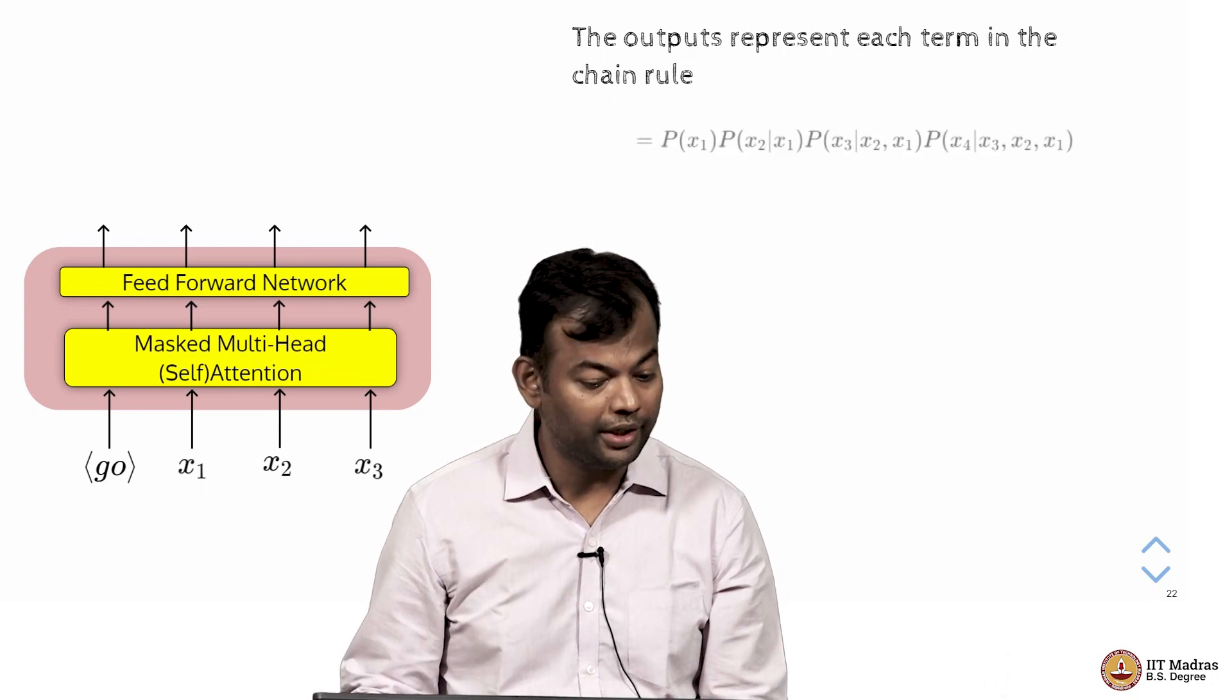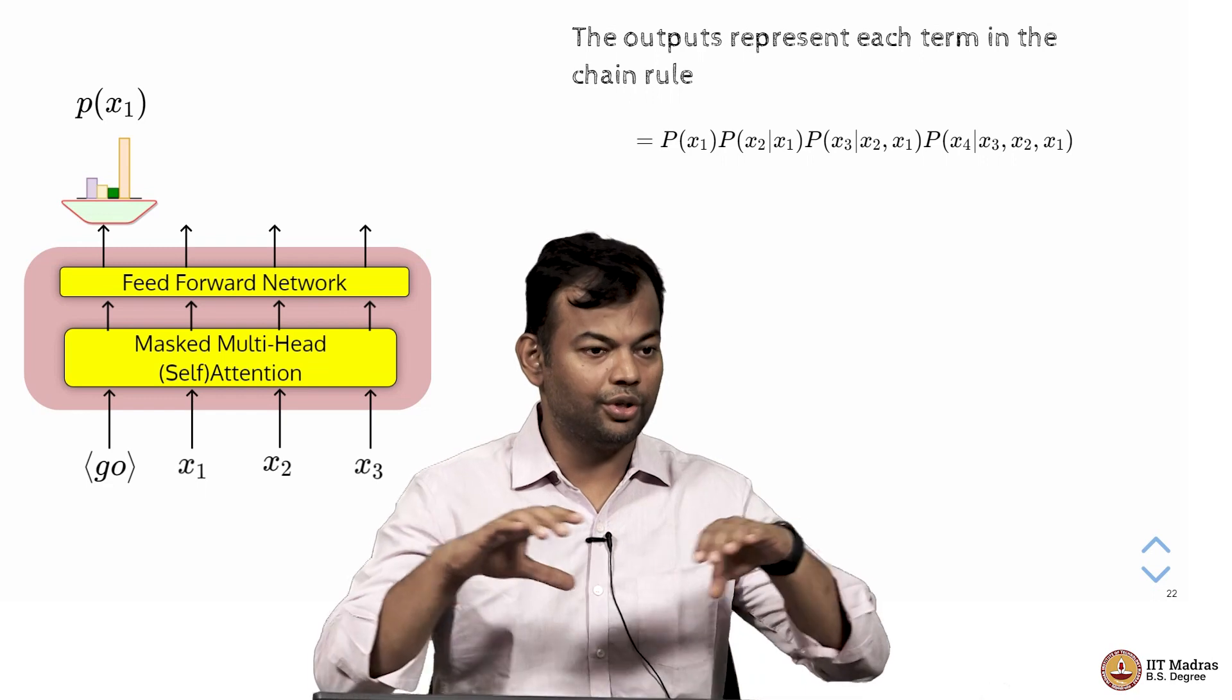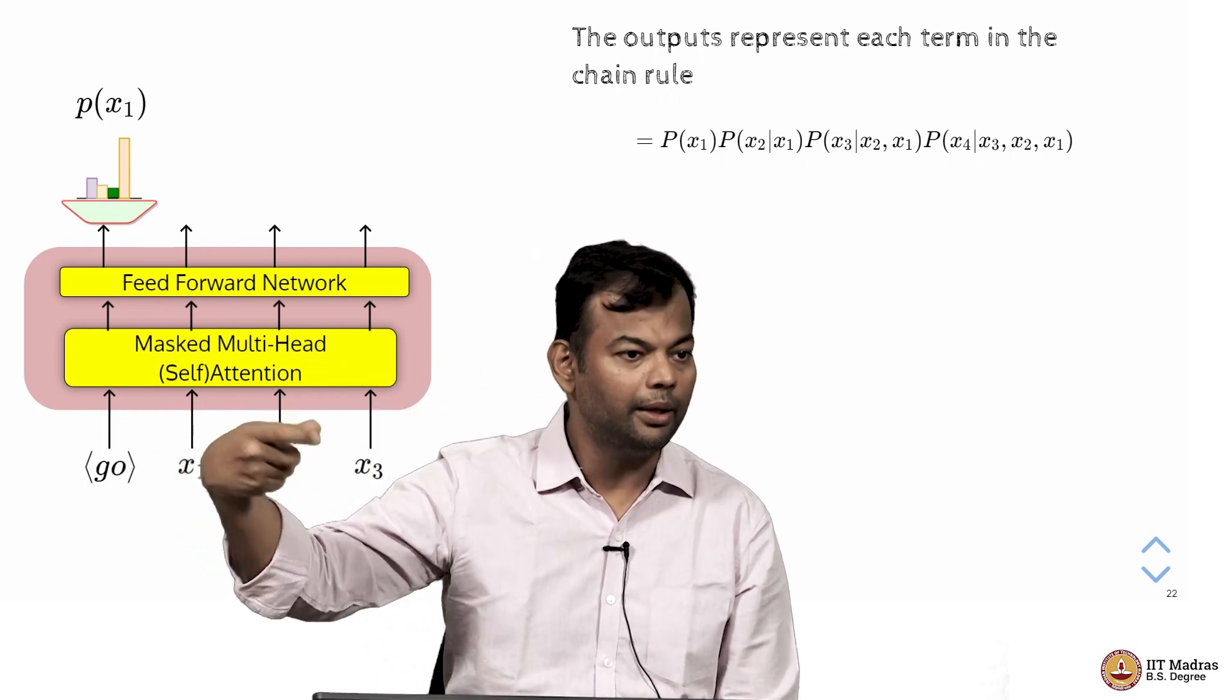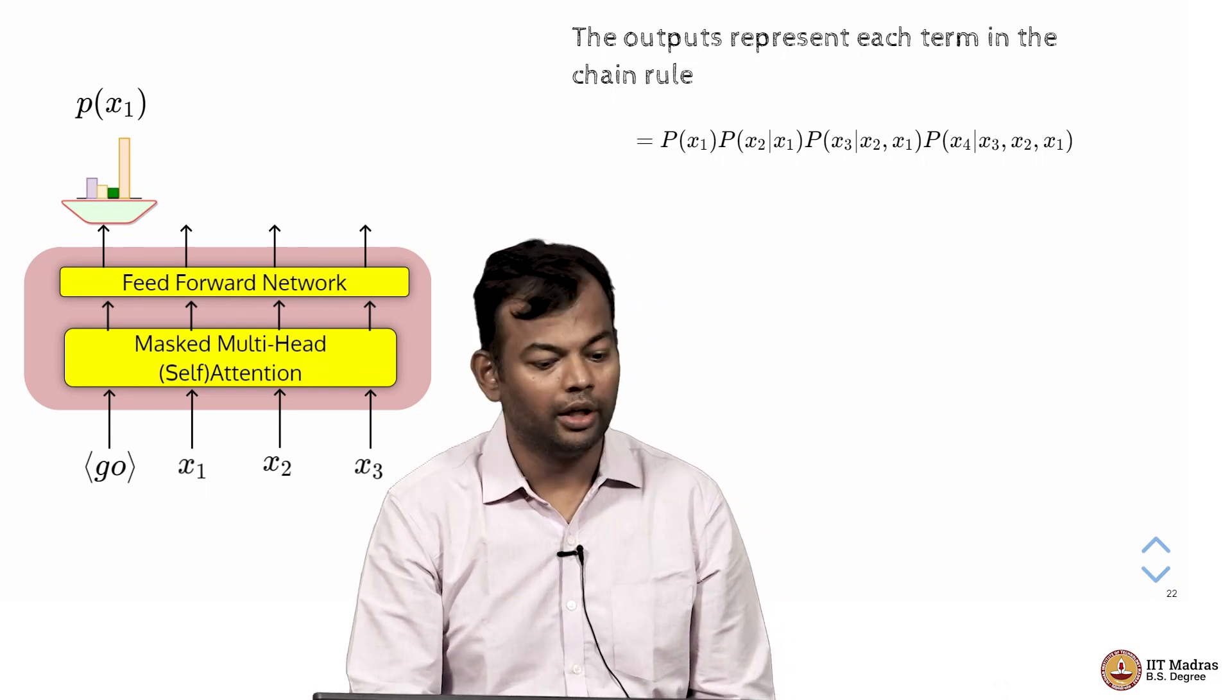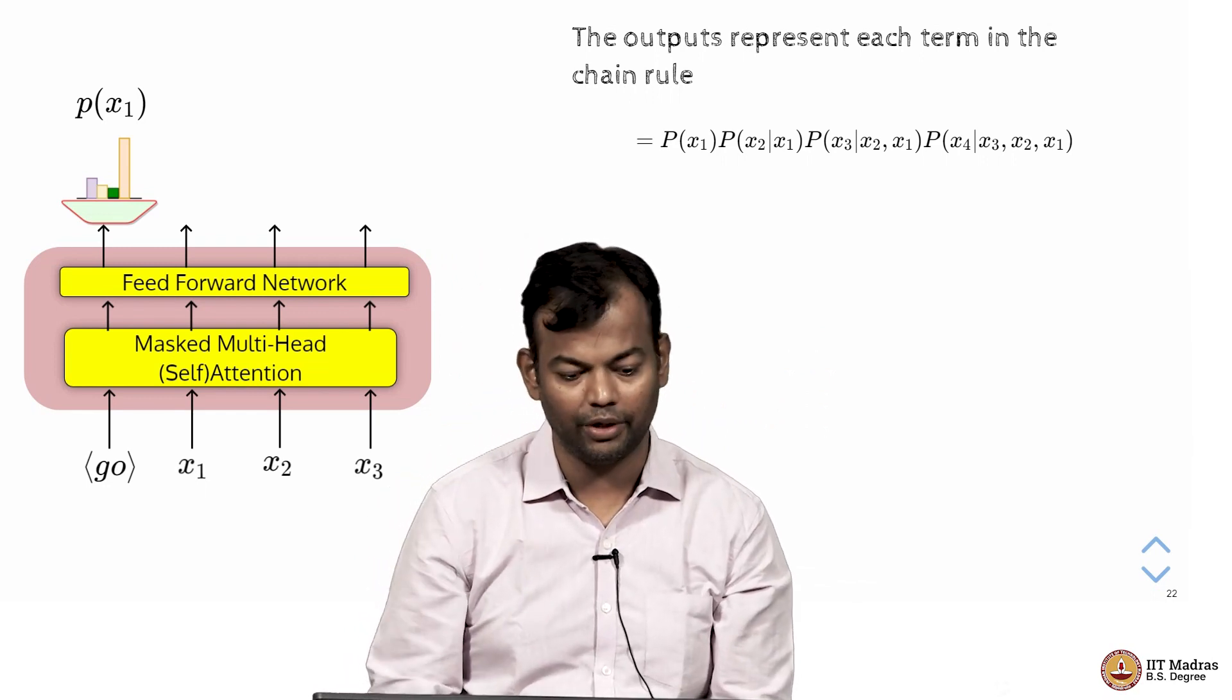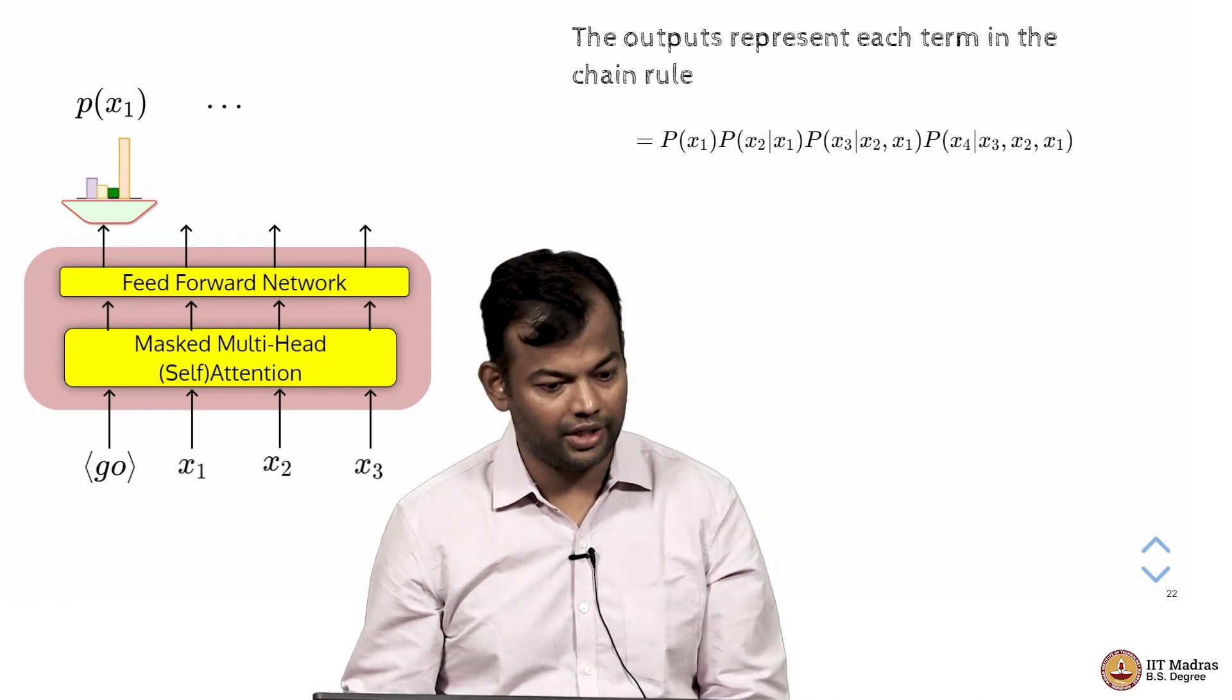So what is the output here? At the first instance I want to predict a distribution over the vocabulary, which will tell me what is the probability of any of the V words in the vocabulary being the first word. So it tells me the probability of any of the first word taking on any of the V values that is there in the vocabulary. So that is P of X1. Now once I have that, I will do this auto-regressive generation.